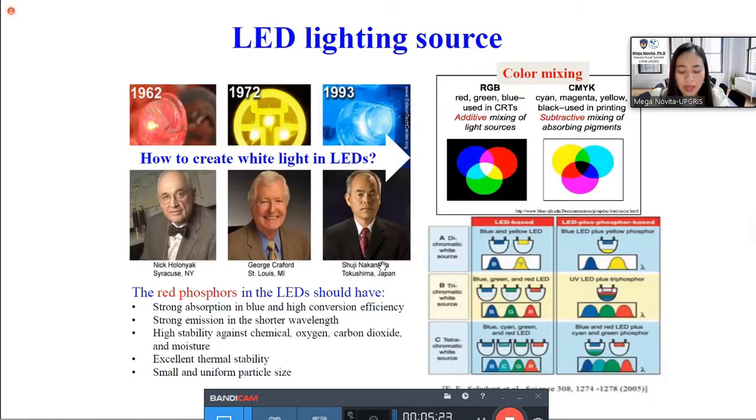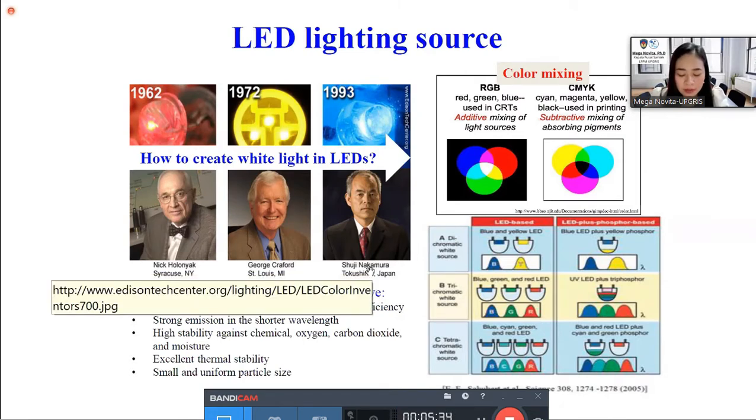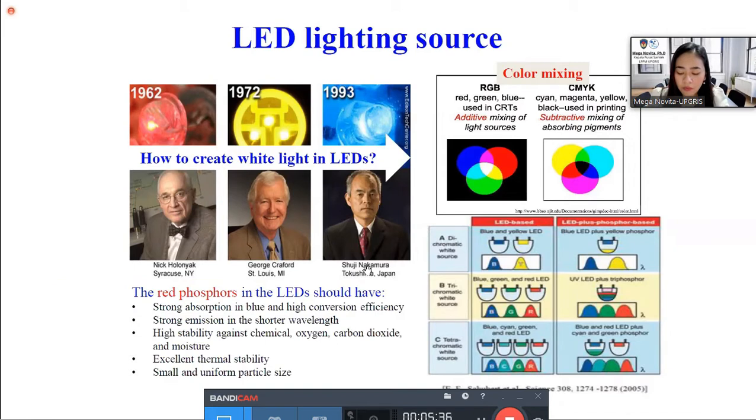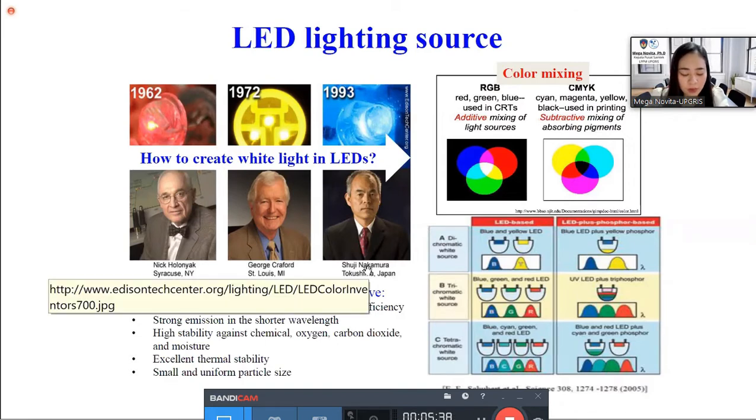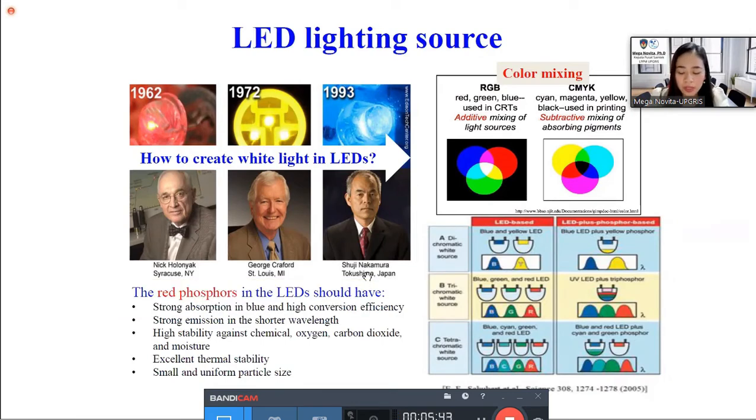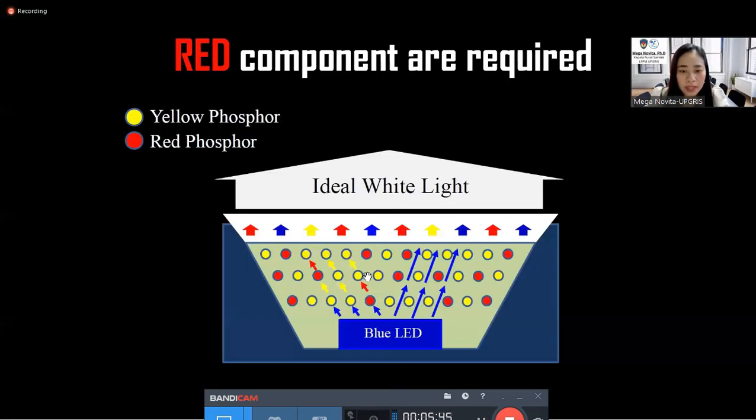Actually, there are many ways to get the ideal white light, such as mixing all LED chips like red, yellow, and blue. But this way is too expensive. Since the current white LED constructed from one blue LED chip coated with yellow phosphor, then adding red phosphor is the easiest and cheapest way. The blue LED chip emits blue light converted into white light by both yellow and red phosphors. By this structure, we will get the ideal white light.